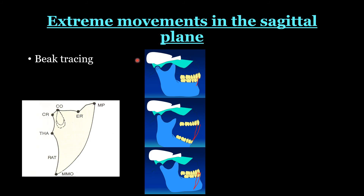In the sagittal plane, mandibular movement gives a characteristic beak tracing with three components: the posterior opening border, the anterior opening border, and the superior border. The posterior opening border starts at the centric relation position; mouth opening occurs through rotation until the terminal hinge axis — a separation of 20 to 25 mm — then translation occurs leading to maximal mouth opening. The anterior border corresponds to maximal protrusion. The condyle first rotates during mouth opening, then translation occurs to reach maximal mouth opening and then maximal protrusion.